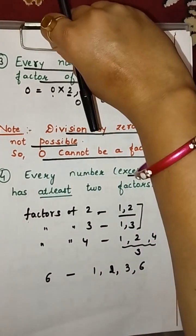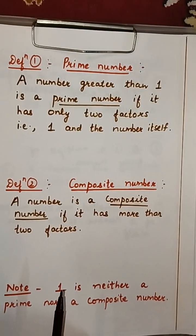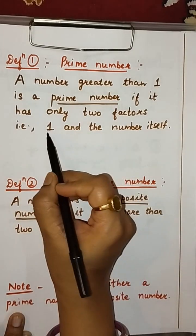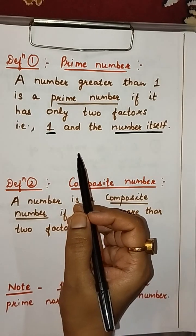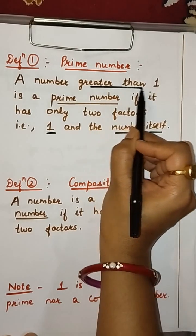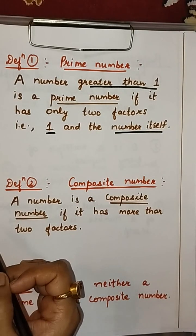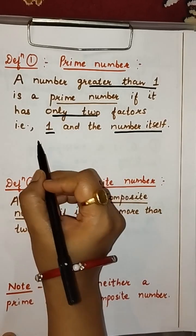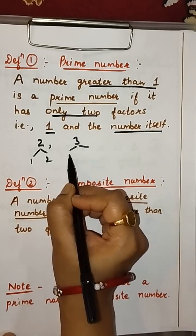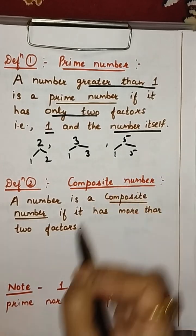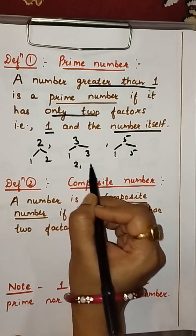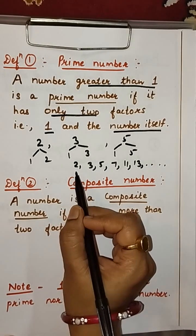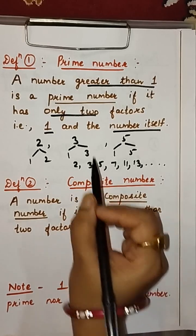From this property, two terms arise: prime numbers and composite numbers. A number greater than 1 is a prime number if it has only 2 factors — that is, 1 and the number itself. For example, 2 has factors 1 and 2; 3 has factors 1 and 3; 5 has factors 1 and 5. So 2, 3, 5, 7, 11, 13 are all prime numbers — all greater than 1 with only 2 factors.